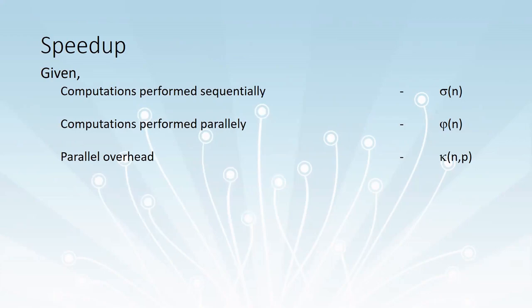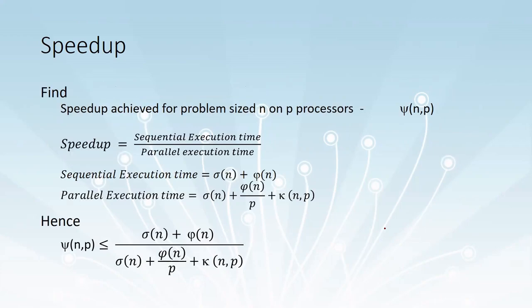Sigma of n represents the computations which can be performed sequentially. Phi of n represents the computations which can be performed in parallel. And kappa of n, p represents the parallel overhead between p processes.